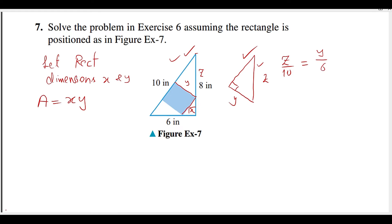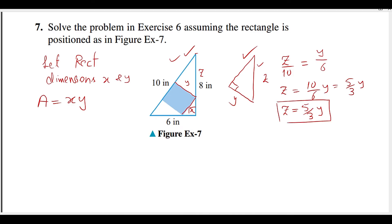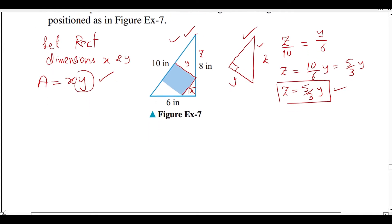Let us show that y or z — let us show that z from here. We have to change this y; we need only the function x. Here y, z in terms of y. Now we have to change this y using another similar triangle, which is this one — this is a right-angle triangle.